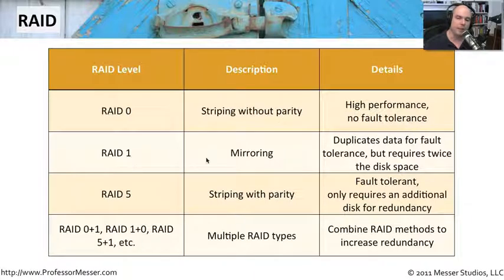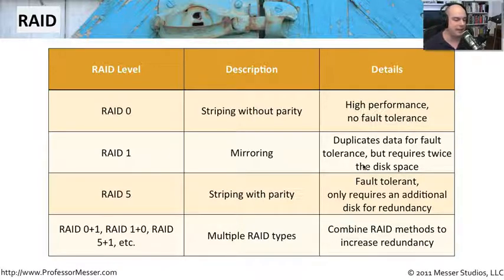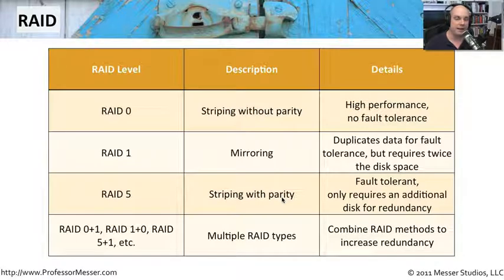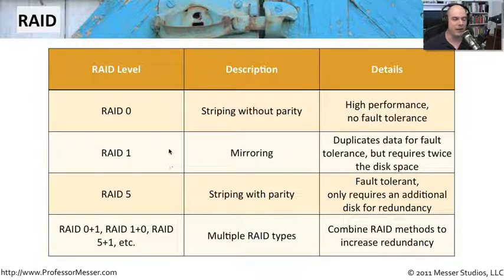RAID 1 is mirroring, where data is exactly duplicated across multiple disks. If you have a 2TB disk, you'll have a duplicate 2TB disk with exactly the same information. If you lose the first disk, the system continues to run using the exact copy. RAID 5 is similar to RAID 0 — it uses striping — but includes an extra drive for parity data. If you lose any of those drives, you can still fault-tolerantly retrieve all data. It doesn't use the exact duplicate amount of storage as RAID 1, giving you some efficiency gains.